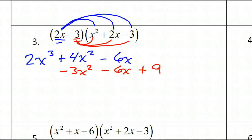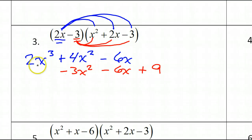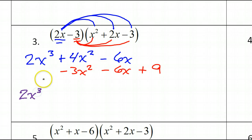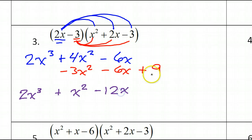We've lined them up, so that's just a little extra convenience. The 2X to the third power has no like term, so we'll just bring it down: 2X to the third power. Together, the X squared terms give positive X squared. Negative 6 and another negative 6 make negative 12X. And bring down the 9. So that is your answer for number 3.